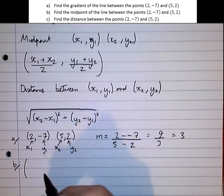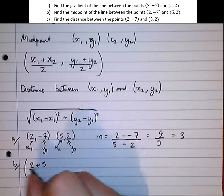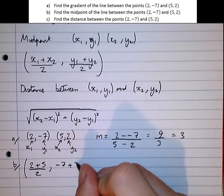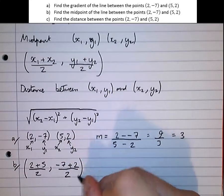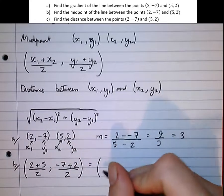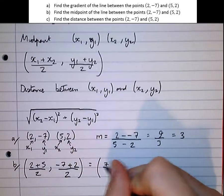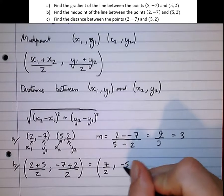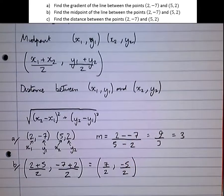So let's add the x coordinates together. 2 plus 5, over 2. And minus 7, plus 2, over 2, which is equal to 7 over 2, and this one becomes minus 5 over 2. I'm going to leave that as a fraction. There's no need to turn that into a decimal.